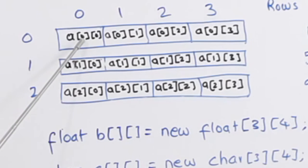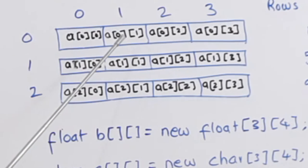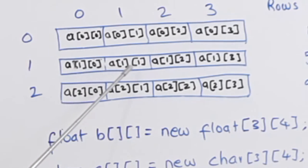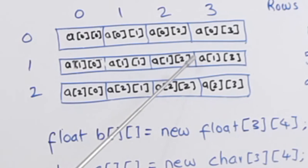Now if you want to address this element, it will be addressed as [0][0], element number 0, 0. This will be [0][1], this will be [0][2], [0][3]. Now in the second row, it will be [1][0], [1][1], [1][2], [1][3].